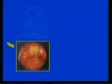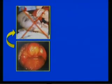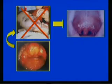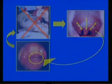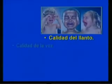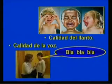Es importante que no olviden que en la epiglotitis aguda, la exploración de la garganta es una contraindicación, por la posibilidad de que ocurra reflejo nauseoso con obstrucción laríngea. Otro aspecto necesario es aprender a identificar la calidad del llanto y de la voz, y relacionarlos con los posibles trastornos.